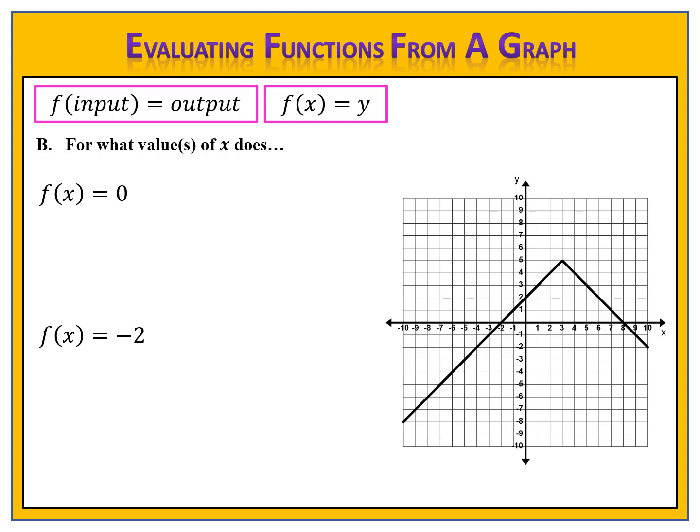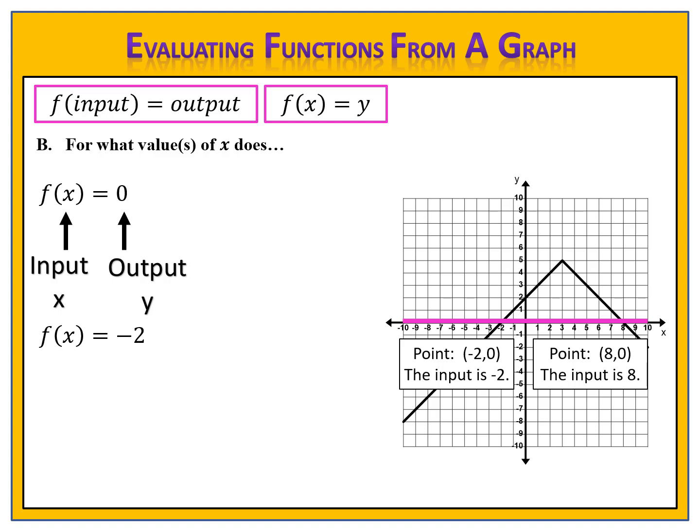Here are some examples of functions where the outputs come from multiple inputs. Please pause the video and determine the value or values of x where f of x equals 0 and f of x equals negative 2. For f of x equals 0: the output is 0, so we draw our line across the graph at 0. The graph intersects at two separate points — at (−2, 0) and at (8, 0). So x equals negative 2 or x equals 8.